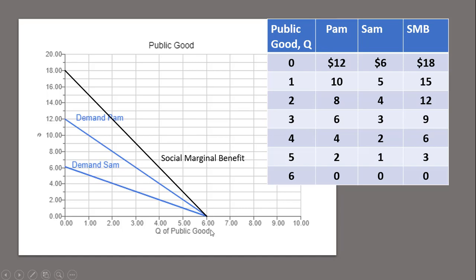And at the very end, when quantity is 6 of the public good, Pam values that 6th unit at $0 and Sam at $0. So $0 will then be the point on the social marginal benefit curve — 0 plus 0. We have our demand for the public good.